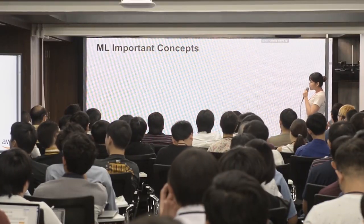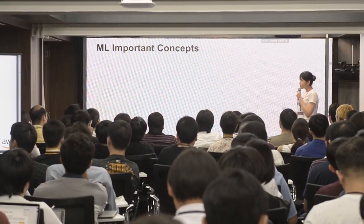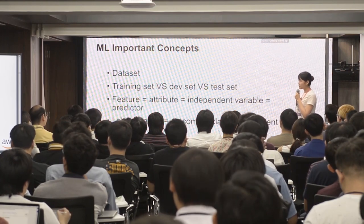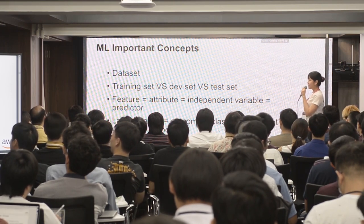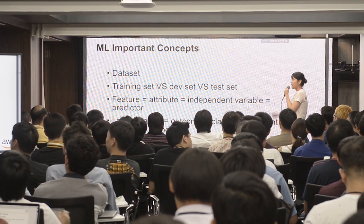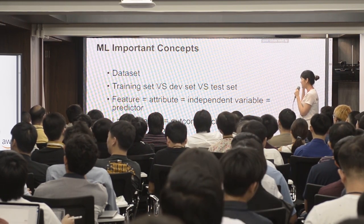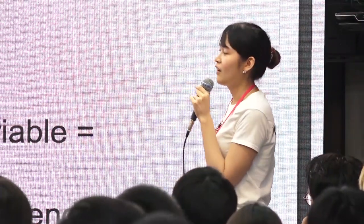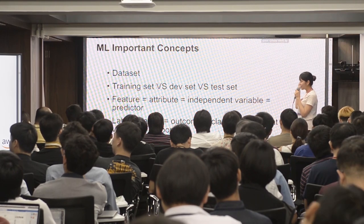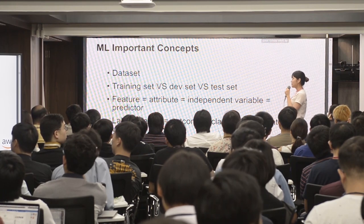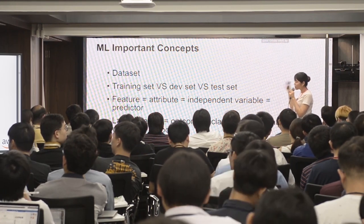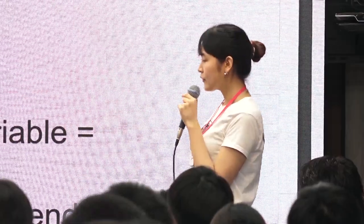Here are some important machine learning concepts I'll use throughout today. We have the dataset split into training, validation, and testing sets. Features equal attributes, independent variables, and predictors — these are the same thing. Labels equal targets, outcomes, classes, and dependent variables. Dimensionality equals the number of features. And model selection will be important throughout.